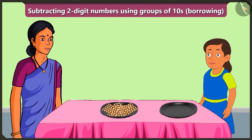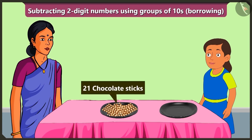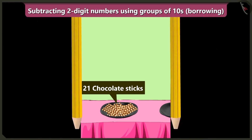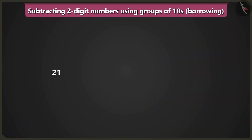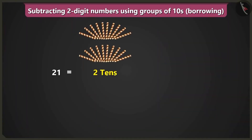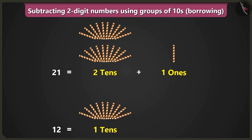I will take 12 sticks. Bubbly, there are a total of 21 chocolate sticks. If you take 12 sticks from a total of 21, how many sticks would Bunty get? To find this out, we have to subtract 12 — which is 1 ten and 2 ones — from 21 — which is 2 tens and 1 one.